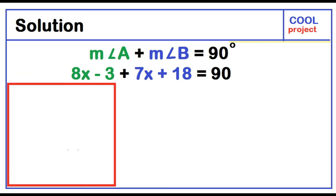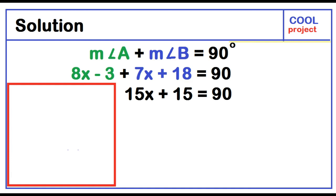8x minus 3 plus 7x plus 18 equals 90. Combining similar terms, 8x plus 7x is 15x. Negative 3 plus 18 is 15. 15x plus 15 equals 90.